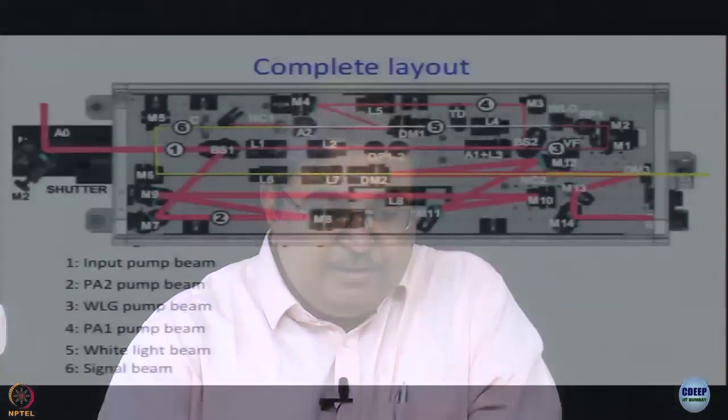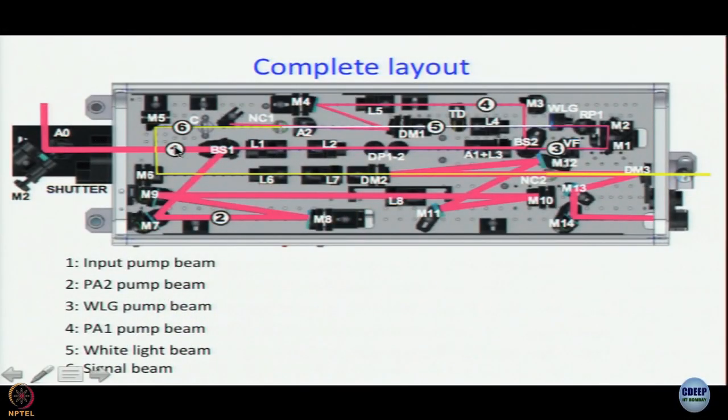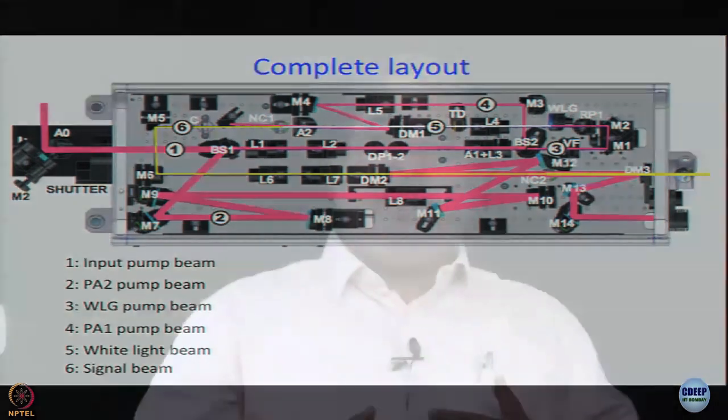What you have is this input pump beam that is labeled 1. It goes to a beam splitter BS1. This beam splitter 1 reflects almost 80 to 98 percent of the beam depending on how much power you put in to this direction towards M7. That branch is called the PA2 power amplifier. So 80 to 90 percent of the input beam is used as a pump for the second stage when you generate strong signal, the power amplifier or sometimes it is just called the power amplifier.